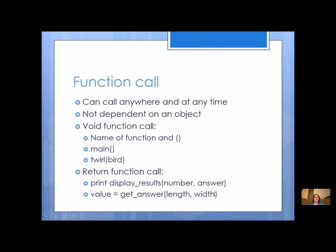A function call can take place anywhere and at any time. It is not dependent on an object. For void function calls, remember that you just have the name of the function in parentheses, such as main or twirl. Return function calls also use parentheses and it has to be part of a statement like print display results, and value equals get answer. And these show examples with parameters and this one without.